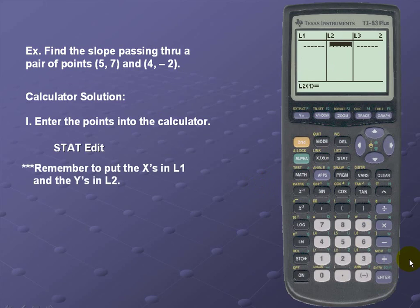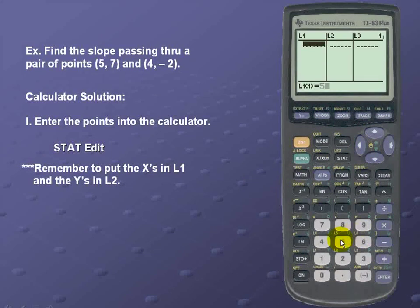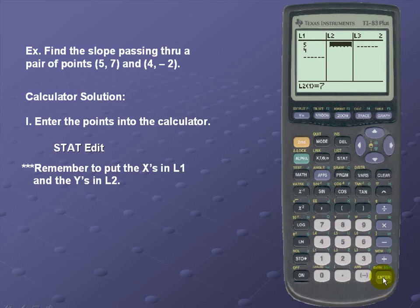Remember to put the X's in list 1 and the Y's in list 2. So in our X's list we'll put 5 and 4, and in our list 2 we'll put 7 and -2.